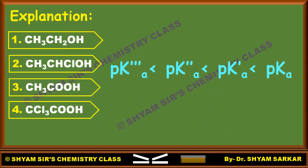Putting all the relations together for our four molecules, the pKa order is: pKa triple prime (trichloroacetic acid) much less than pKa double prime (acetic acid) less than pKa prime (chloroethanol) less than pKa (ethanol). In terms of molecule numbering, the order is 4 < 3 < 2 < 1. This is the correct trend of pKa for these four molecules.